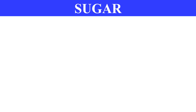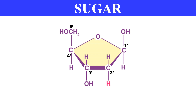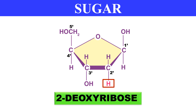The sugar in DNA is deoxyribose. What does this mean? In the case of ribose sugar, there is an oxygen atom at the C2 position. But in the case of deoxyribose, this oxygen atom has been removed — there is only a hydrogen atom. That is why it is known as 2-deoxyribose. This is the sugar present in DNA.